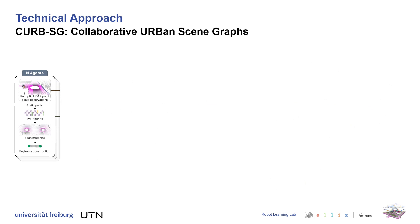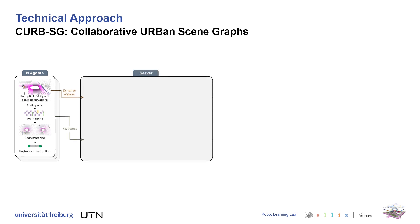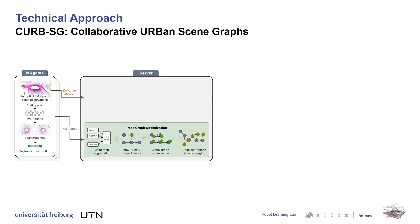In our proposed method, multiple agents run local LiDAR odometry after filtering out dynamic objects using the panoptic information. For certain keyframes, the estimated pose along with the corresponding 3D point cloud is sent to a centralized server. On a separate channel, the dynamic 3D objects extracted from panoptic LiDAR data are sent for every single scan. The server collects the local poses from all agents into a single pose graph and performs inter-agent loop closure detection followed by a global graph optimization.